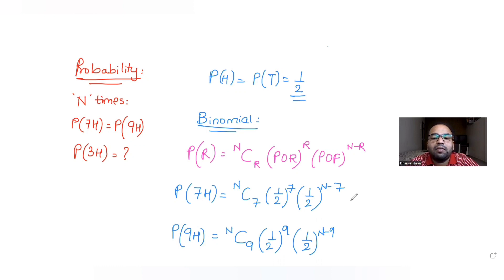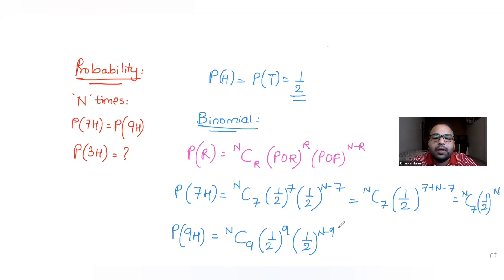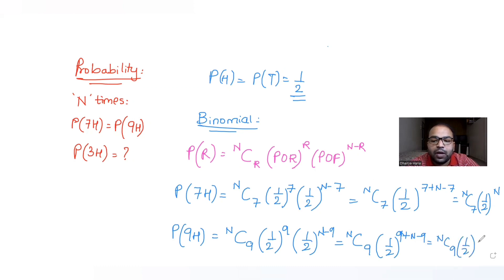Now simplifying both expressions: since the base is the same and the terms are multiplied, the powers get added by the rule of exponents. So P(7 heads) = nC7 × (1/2)^n, and P(9 heads) = nC9 × (1/2)^n.